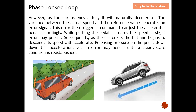On a flat route, if you maintain constant pressure on the accelerator, your speed remains the same. When climbing a hill, your speed will reduce, so you need to step a little more on the accelerator to maintain 60 km/h. Conversely, when going downhill, your speed increases, so you need to reduce accelerator pressure to maintain 60 km/h. During these adjustments, some small error will still persist.